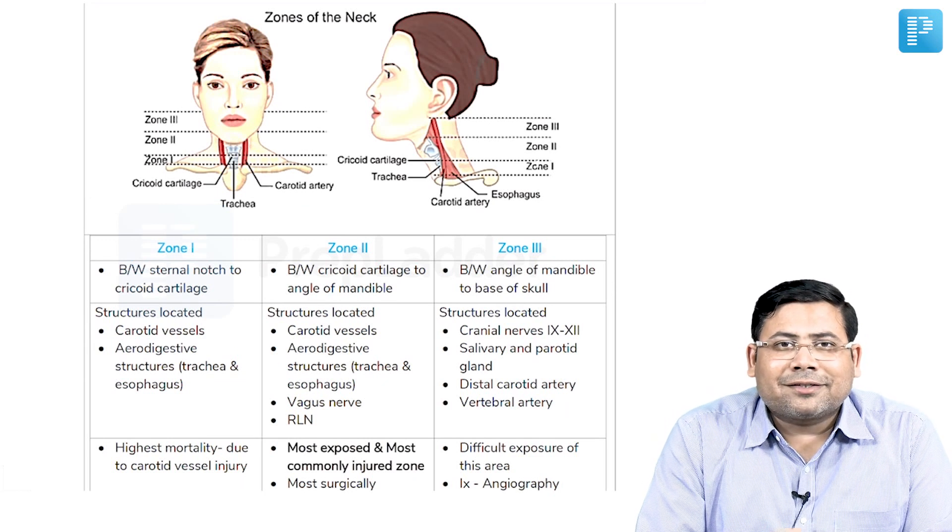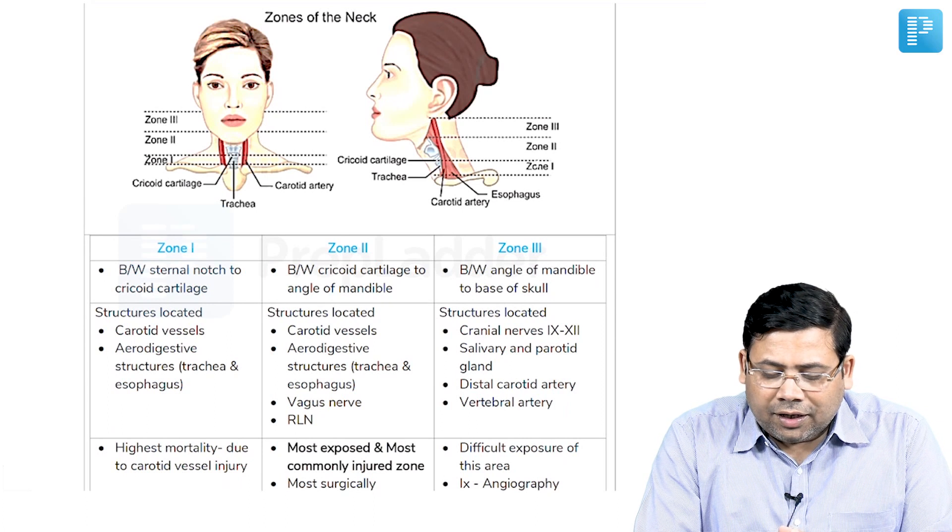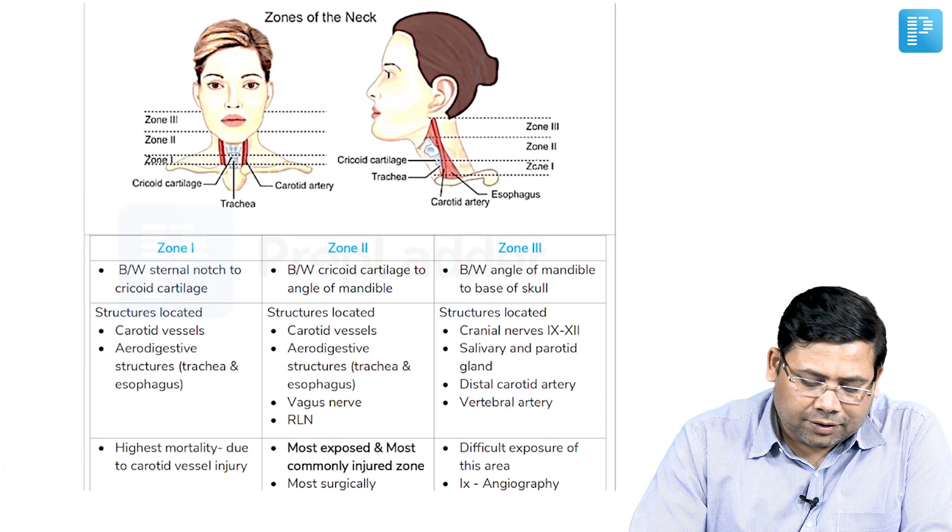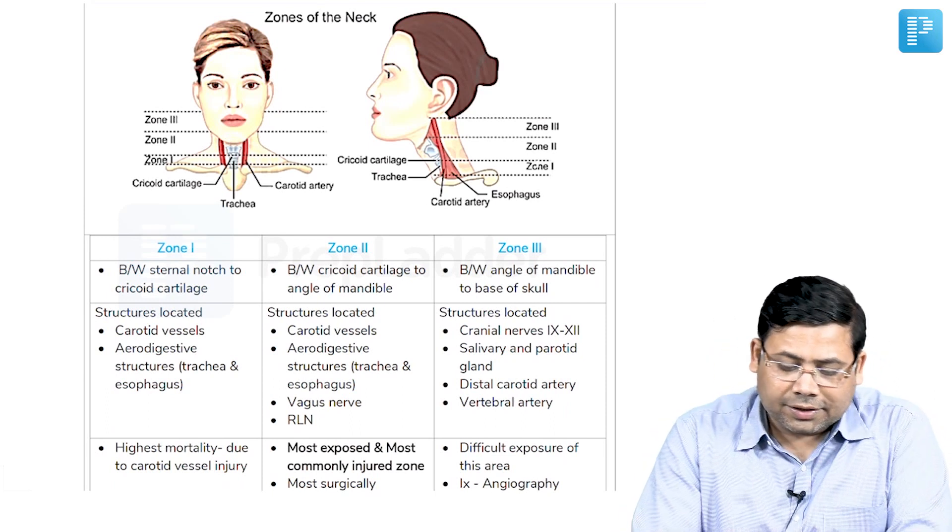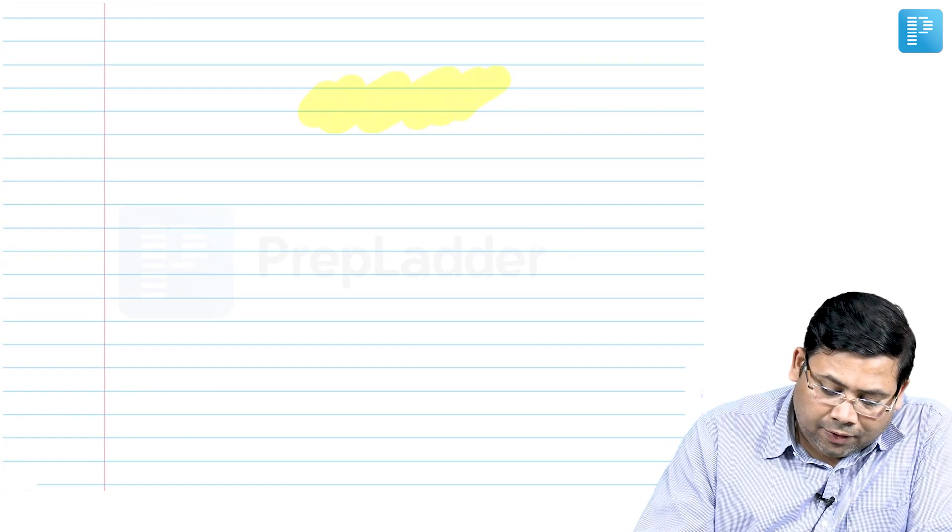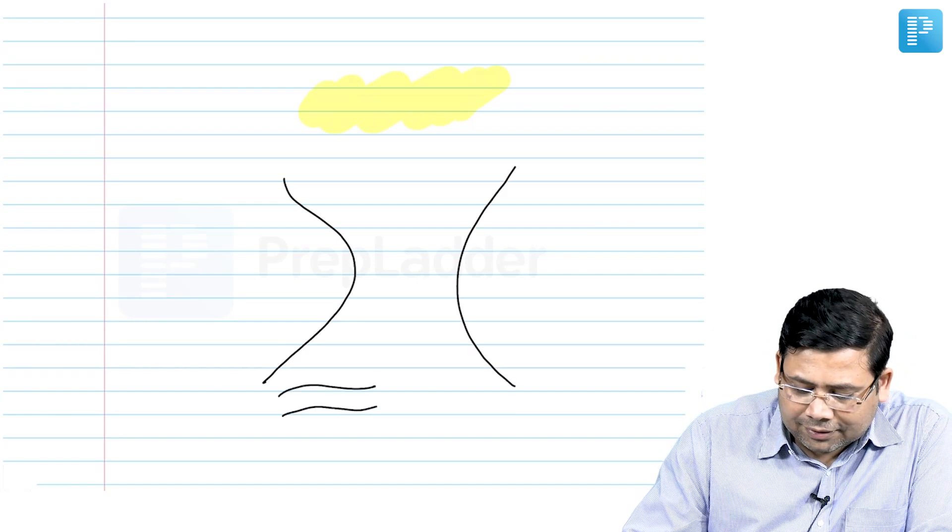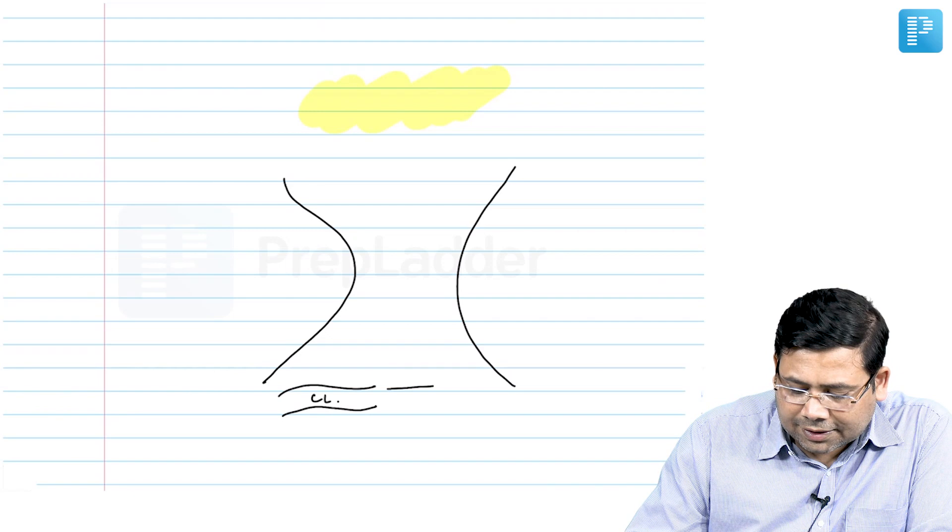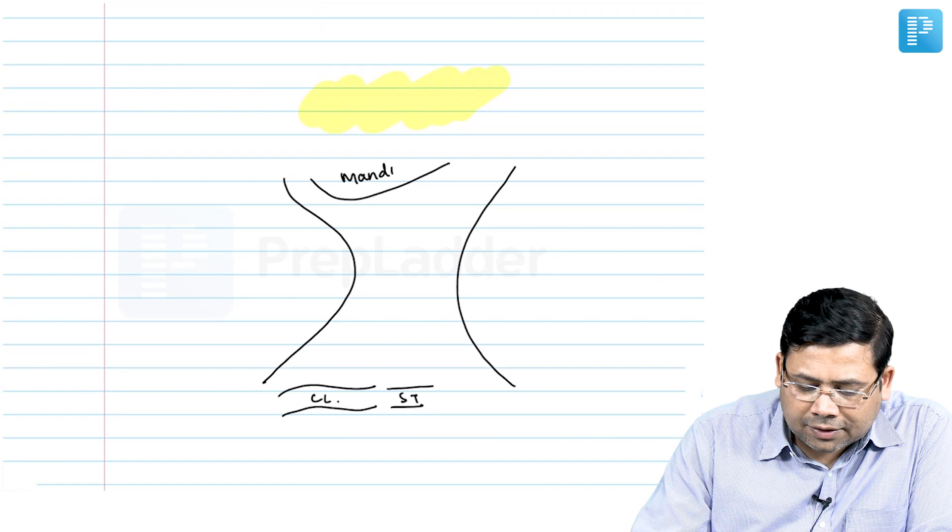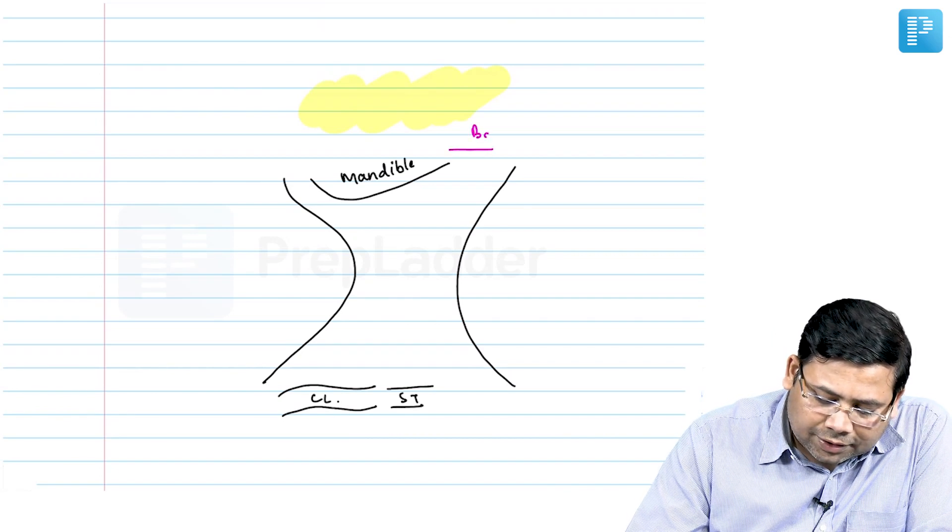So hi dreamers, let us discuss in this teaser about the zones of neck and neck injury. Now the zones of neck are very important and integral part of this discussion. When we talk about the zones of the neck, this is the neck, this is the clavicle, this is the sternum and this is the mandible. So in between these two places all the zones are based. From the base of the skull up to the sternum we have the zones.